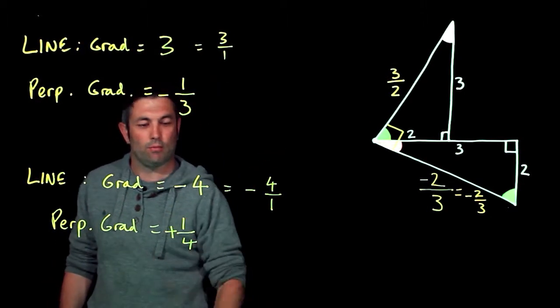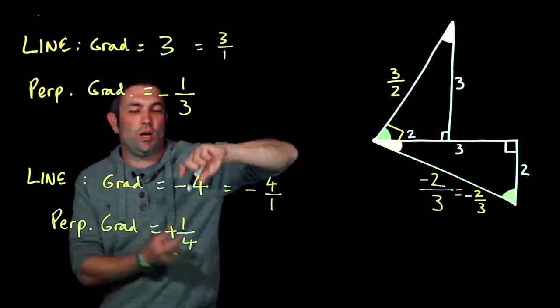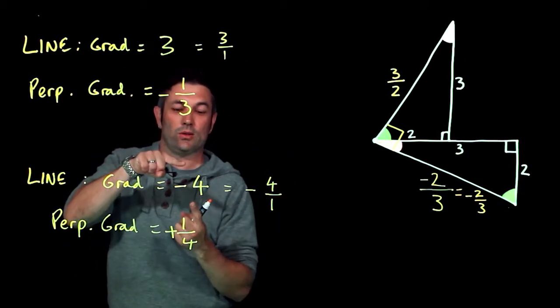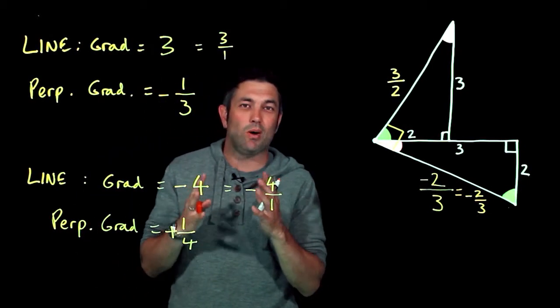Change the sign. So all you're finding here is that you turn the fraction upside down, change the sign. Or some people might say if you multiply the two gradients together, the answer is -1.